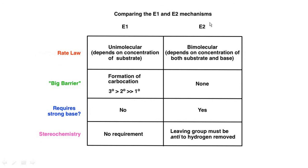What is the difference between E1 and E2 mechanism? E1 is unimolecular elimination and E2 is bimolecular elimination. E1 depends on the concentration of only one substrate; E2 depends on the concentration of both substrate and base. In E1 there is formation of a carbocation — stability order: tertiary > secondary > primary. In E2 there is no carbocation; instead a transition state is formed. E1 requires no strong base; E2 requires a strong base. For stereochemistry: E1 has no stereochemical requirement because carbocation forms first; in E2, the leaving group is removed anti to hydrogen — anti-elimination stereochemistry applies.